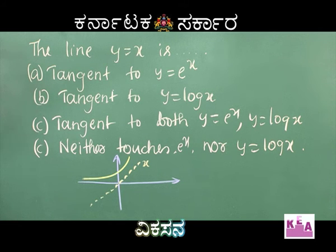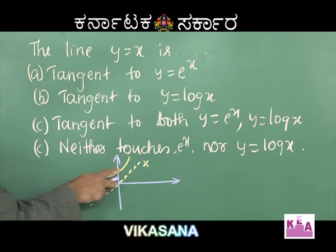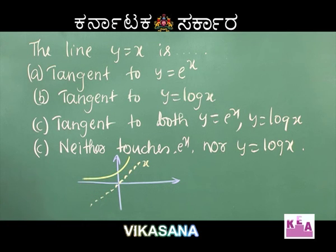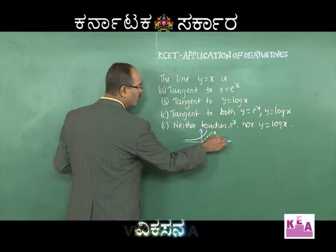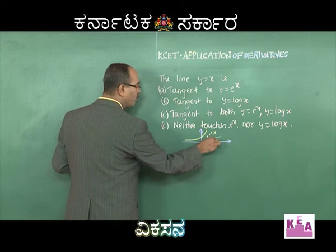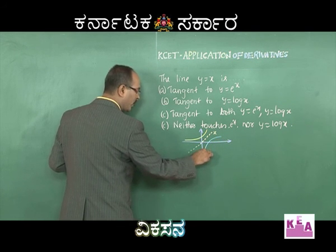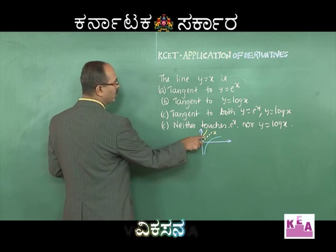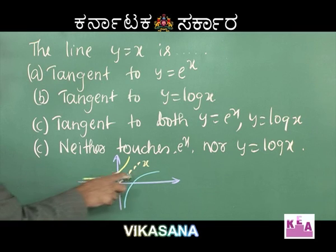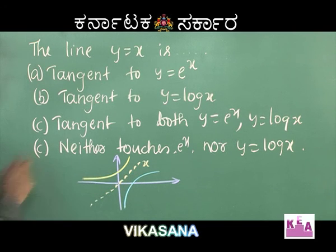And what about log x? Log x is nothing but a replica of eˣ over this particular line. Therefore y = log x also will not meet this curve. Therefore, y = x neither touches y = log x nor touches y = eˣ.